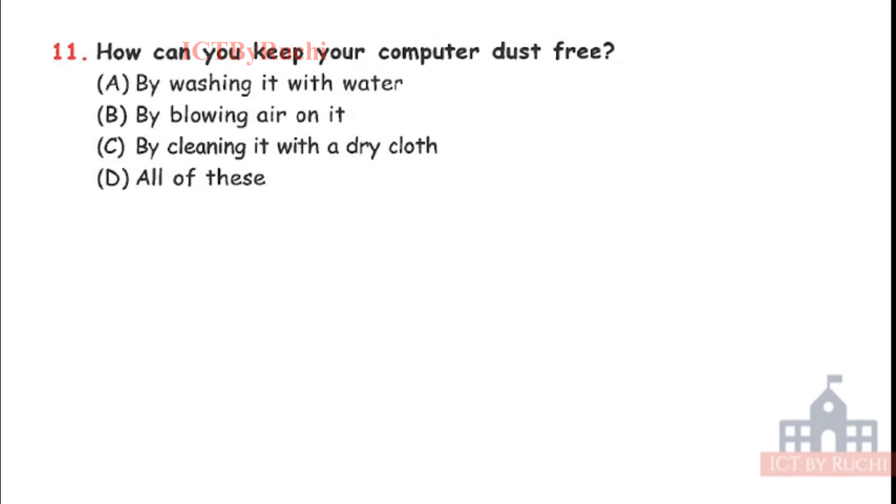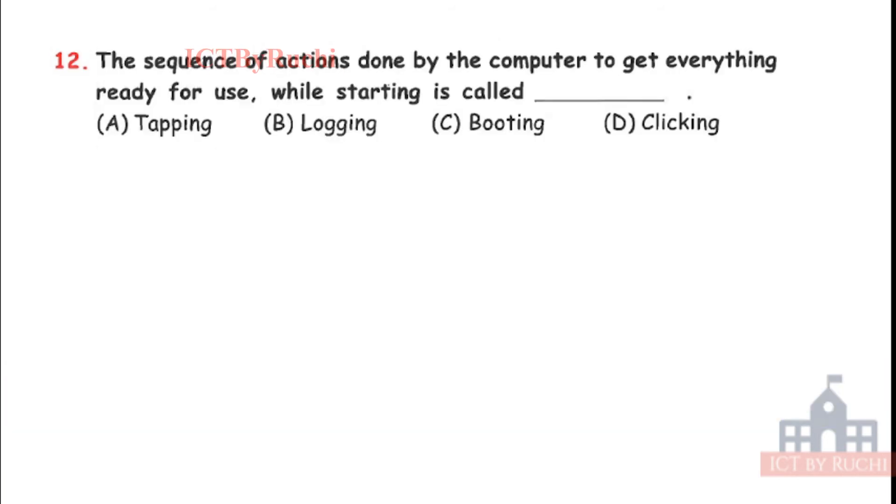Eleventh. How can you keep your computer dust free? A. By washing it with water, B. By blowing air on it, C. By cleaning it with a dry cloth, or D. All of these. Answer is C. By cleaning it with a dry cloth. We cannot put water in it because it will give us current or also it will become bad. Blowing air, we cannot blow the air. Okay.